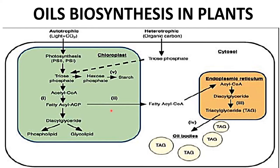The fatty acyl ACP enters into the cytoplasm and then into the endoplasmic reticulum to produce acetyl-CoA, which is converted into diacylglyceride and then to triacylglyceride. These triacylglycerides accumulate in the form of oil bodies in the cytosol.